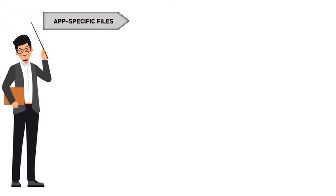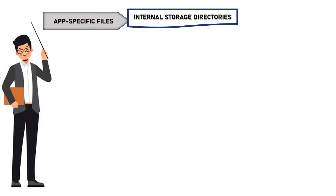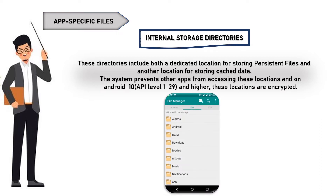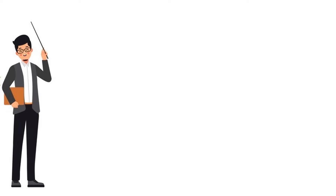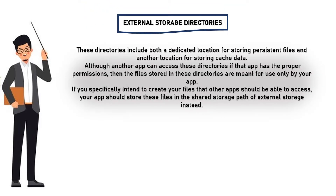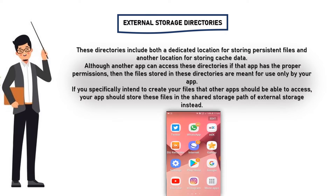App-specific files. Internal storage directories: these include both a dedicated location for storing persistent files and another location for storing cached data. The system prevents other apps from accessing these locations, and on Android 10 (API level 29) and higher, these locations are encrypted. External storage directories: these also include a dedicated location for persistent files and cached data. Although another app can access these directories if it has the proper permissions, the files stored here are meant for use only by your app.